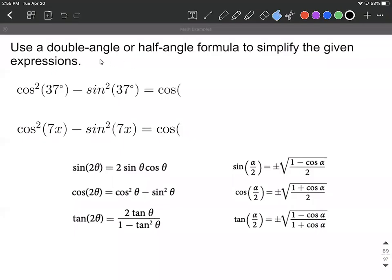On this example we're instructed to use either a double angle formula or a half angle formula to simplify these expressions. Our expressions are cosine squared of 37 degrees minus sine squared of 37 degrees, and cosine squared of 7x minus sine squared of 7x.